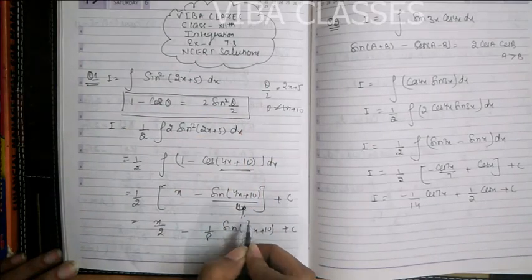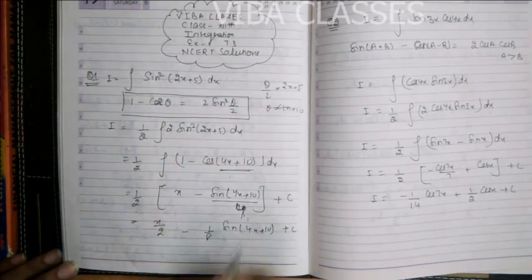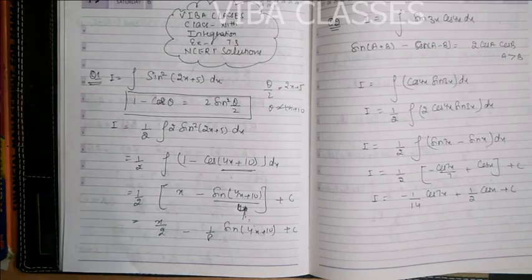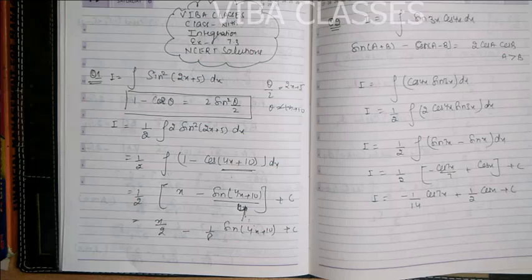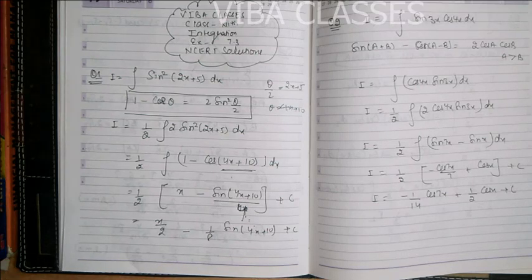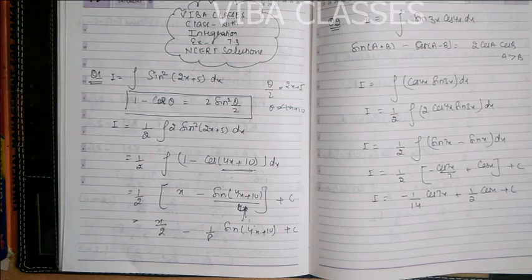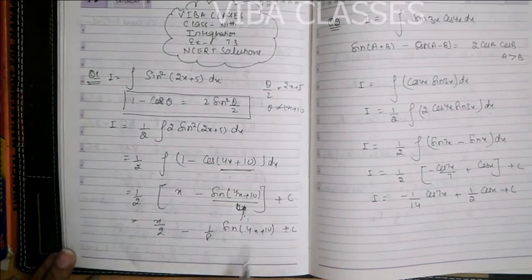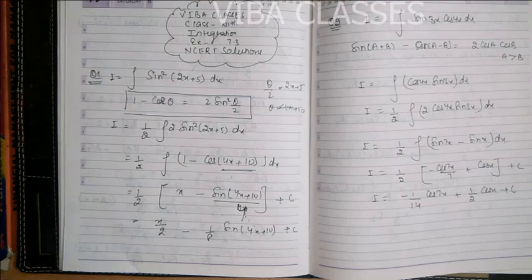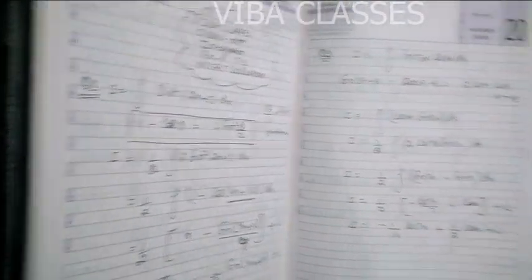यह ध्यान रखने वाली बात है: जब आप integration के अंदर chain rule लगा रहे हैं, तो denominator में only constants are allowed. अगर chain rule लगाने पर denominator में variable आ रहा है, तो chain rule applicable नहीं है. यहाँ chain rule तभी लगा जब denominator में constant था. 1/2 को अंदर multiply करिए — you get your answer.